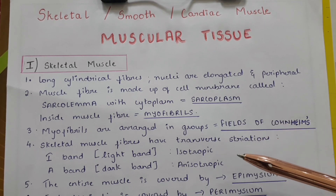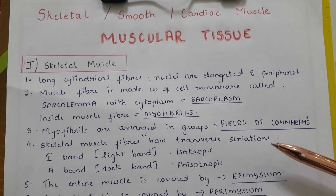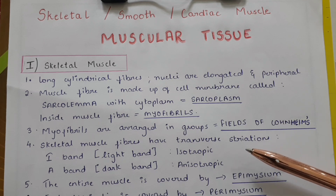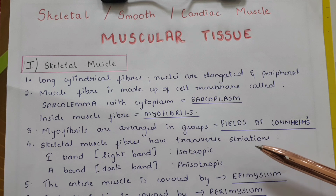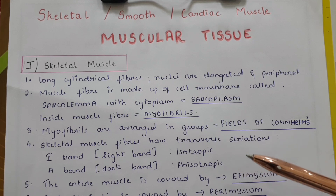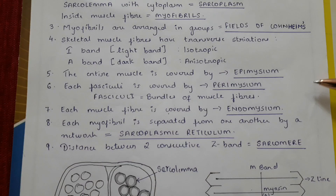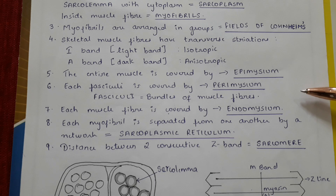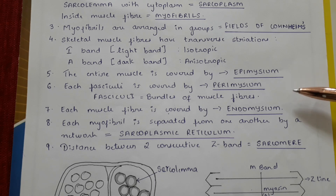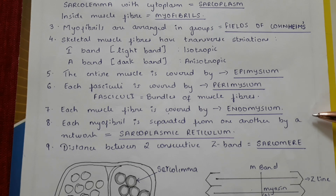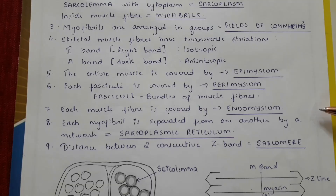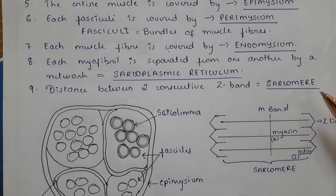The skeletal muscle fibers have transverse striations. The I-band are the light bands which are isotropic, and the A-band are the dark bands which are anisotropic. The entire muscle is covered by the epimyceum, each fasciculi is covered by the perimyceum. Fasciculi are bundles of muscle fibers, and each muscle fiber is covered by the endomyceum.